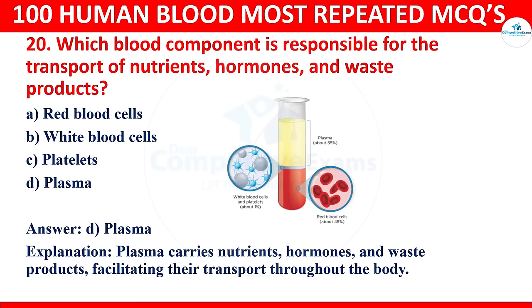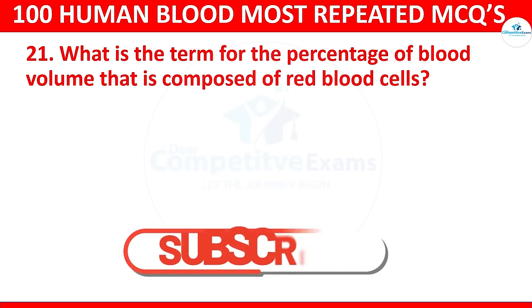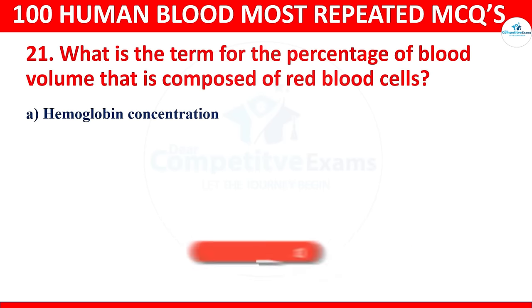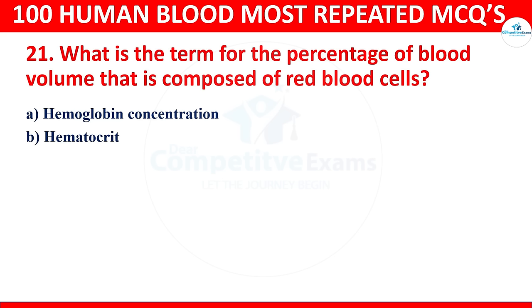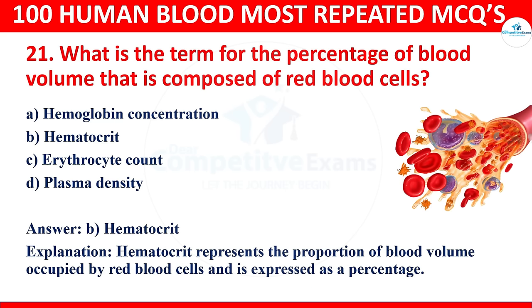Question 21: What is the term for the percentage of blood volume that is composed of red blood cells? Options: hemoglobin concentration, hematocrit, erythrocyte count, or plasma density. The correct answer is hematocrit. Hematocrit represents the proportion of blood volume occupied by red blood cells and is expressed as a percentage.